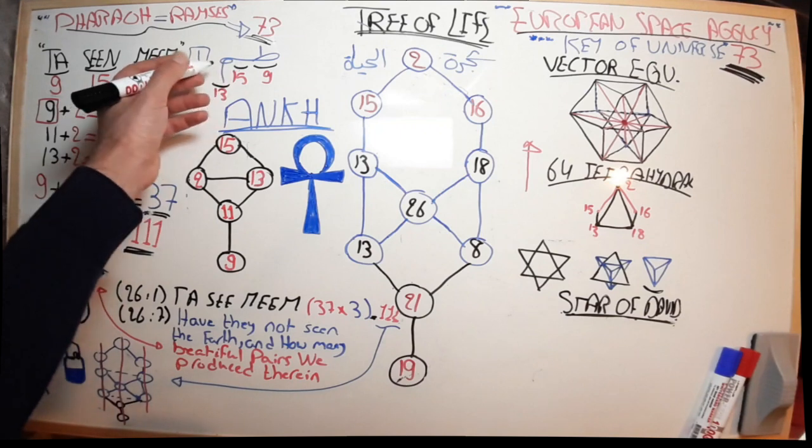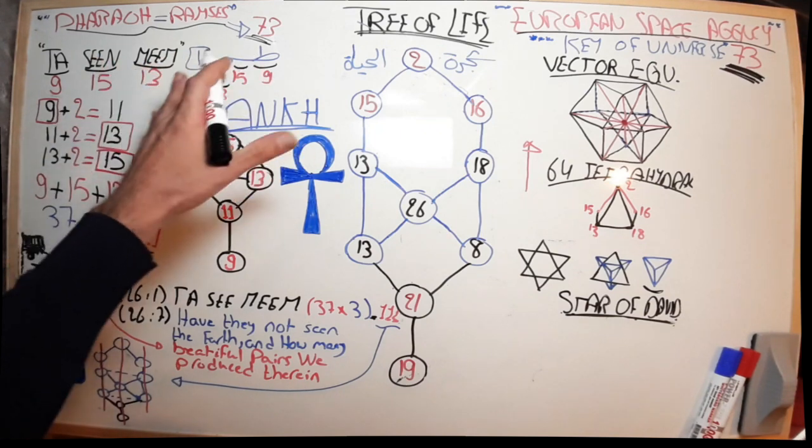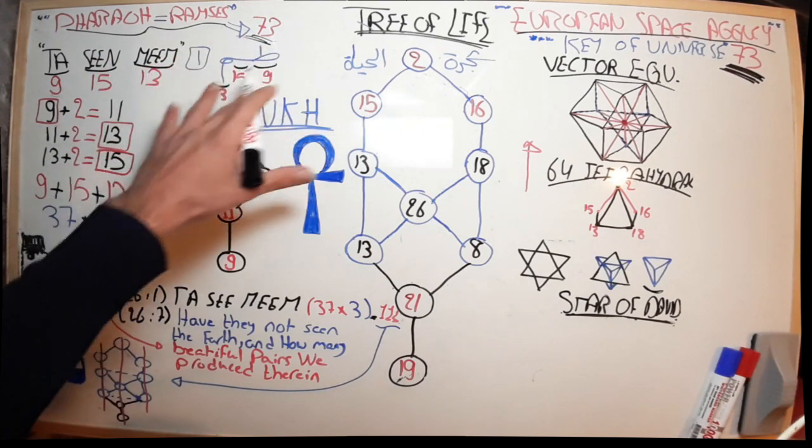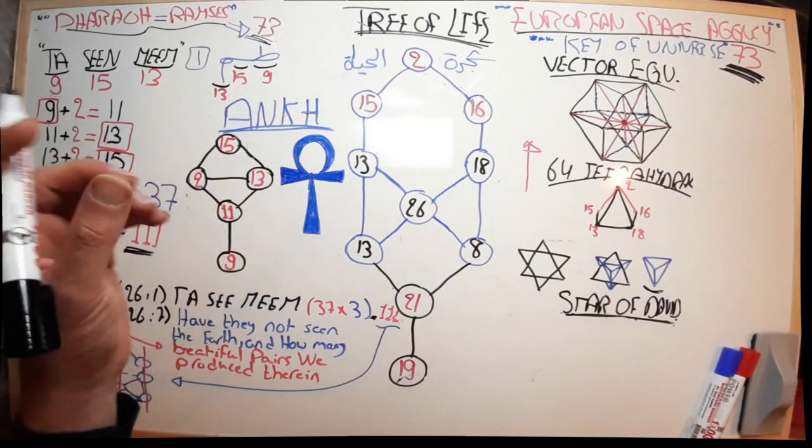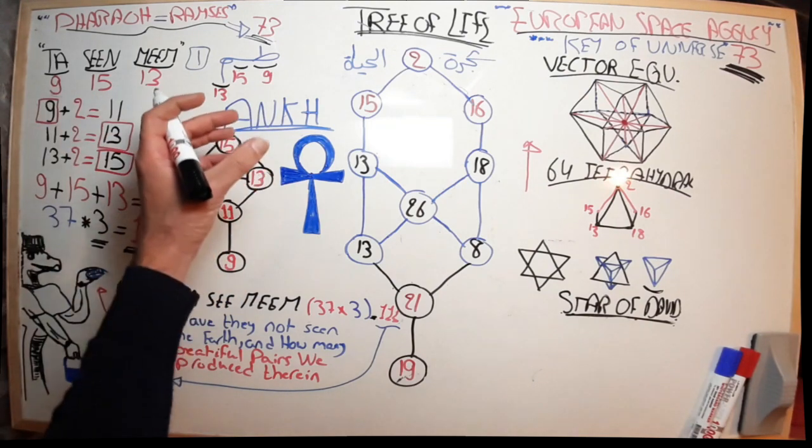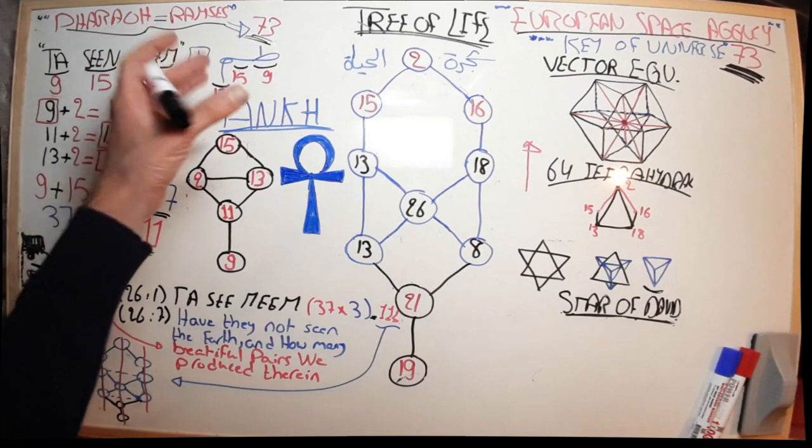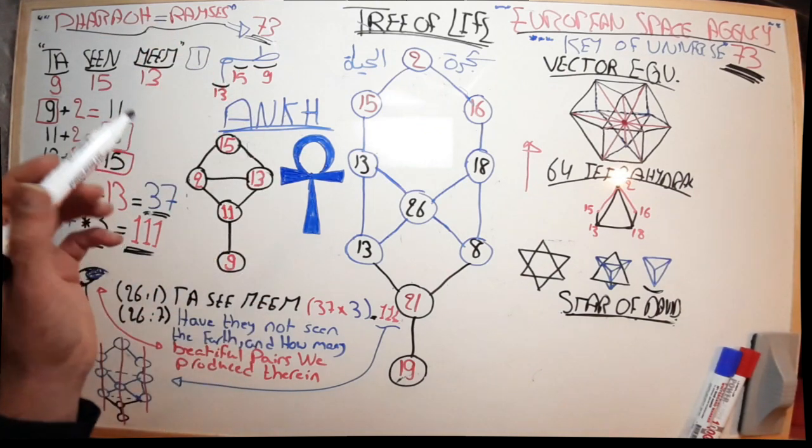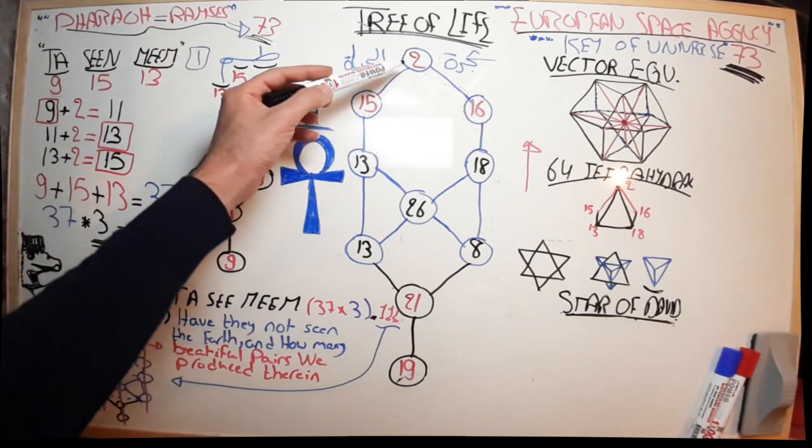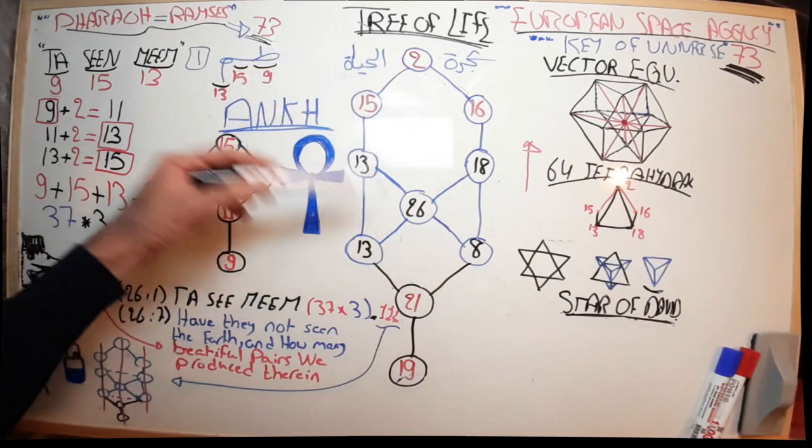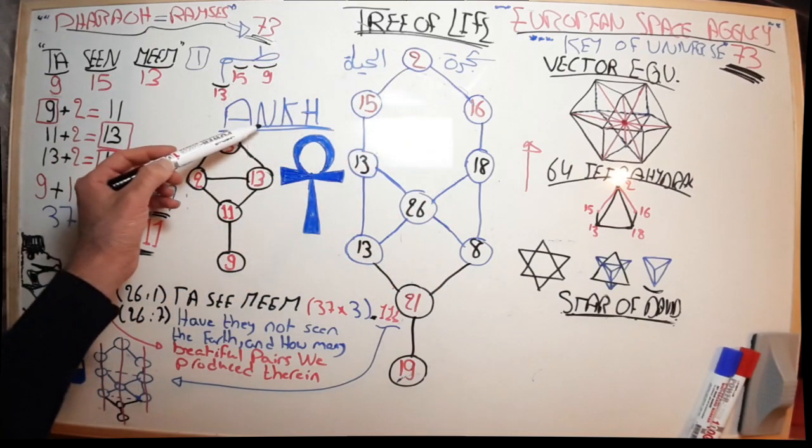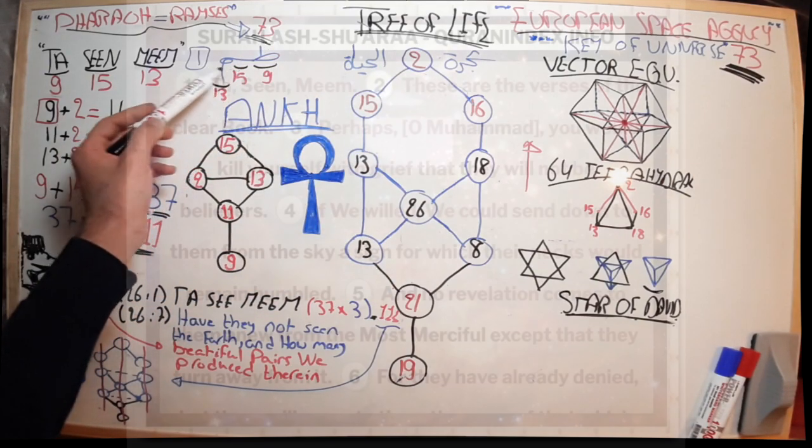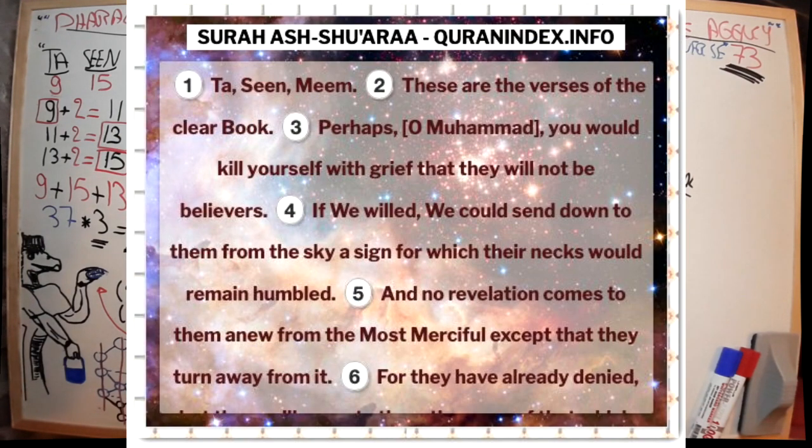As we mentioned before, in some of the chapters in the Quran, the first verses start with letters. Those letters basically mean nothing if you read them as one word, but they are like a mystery that was waiting to be decoded. One of those was Ha-Meem, from which we got the Tree of Life.